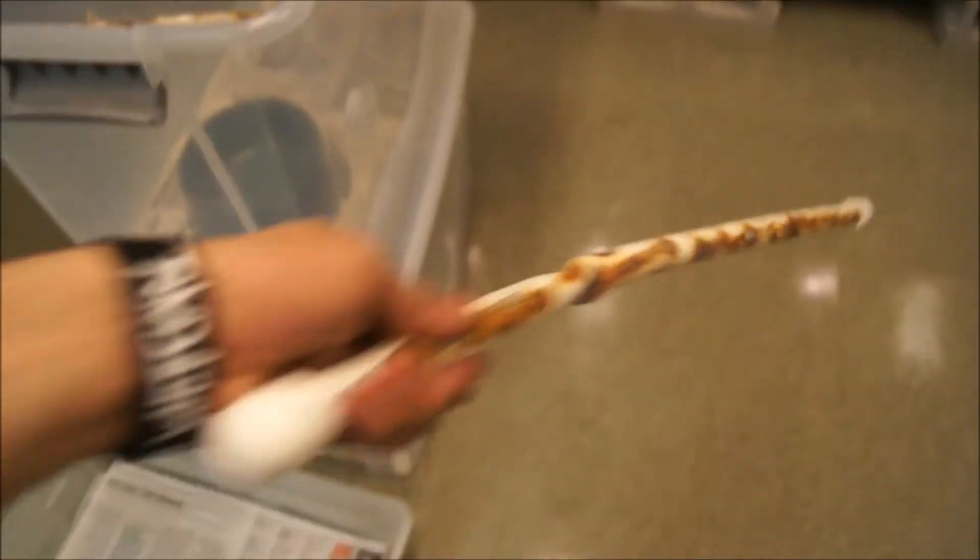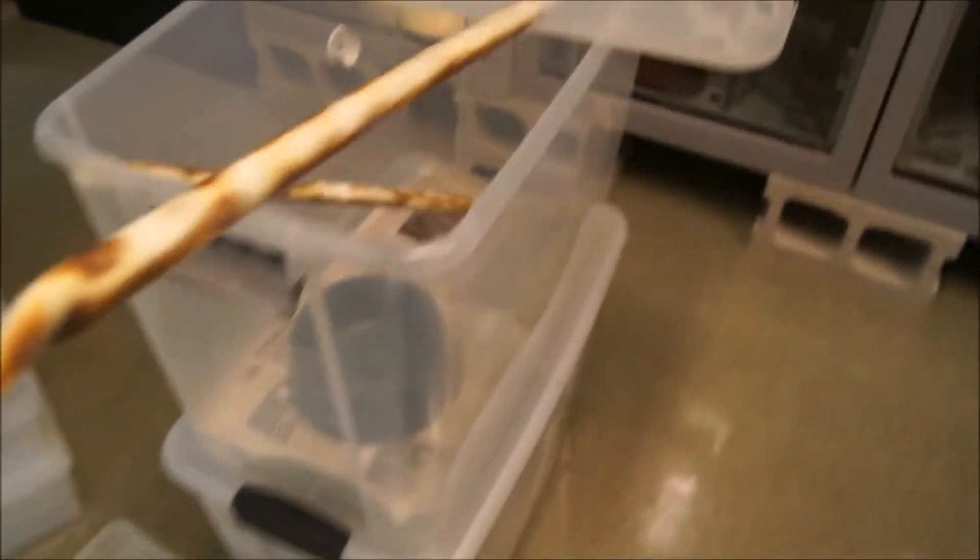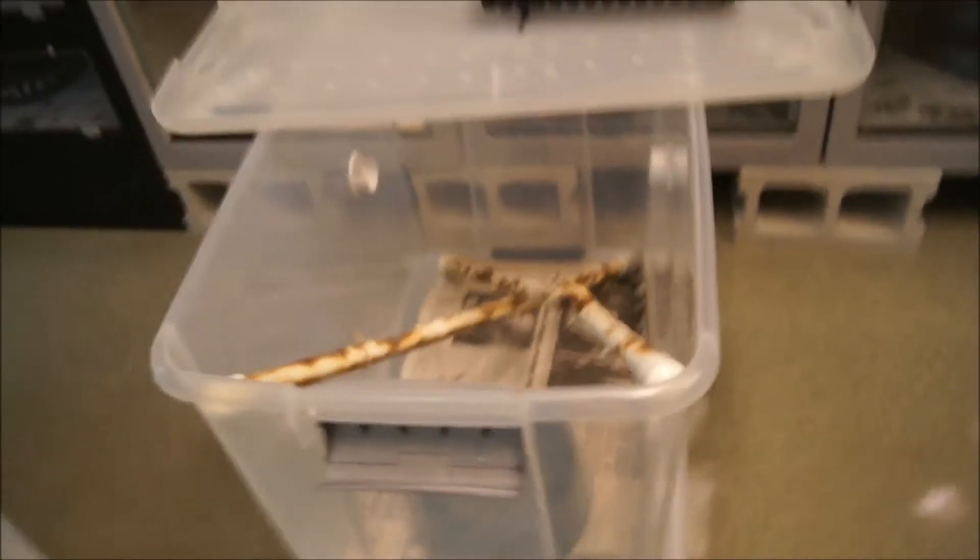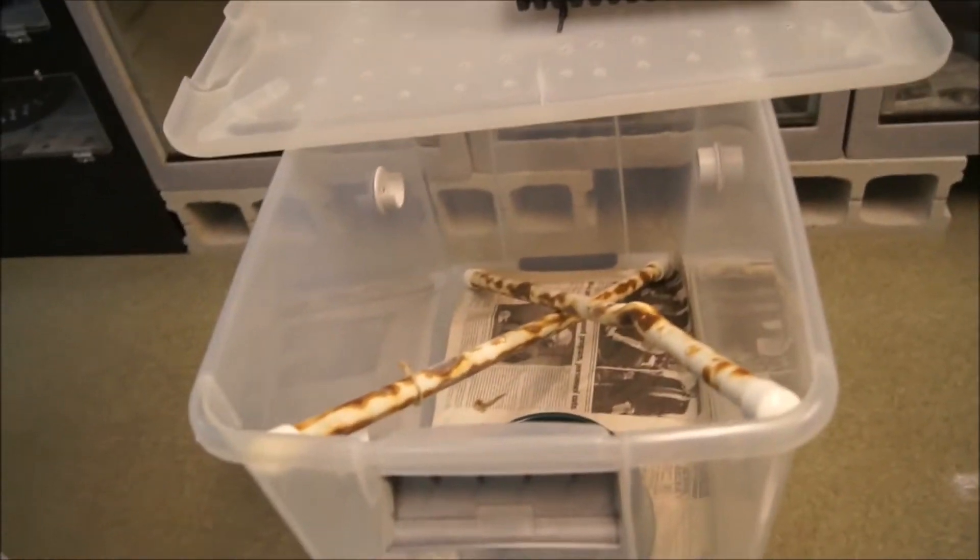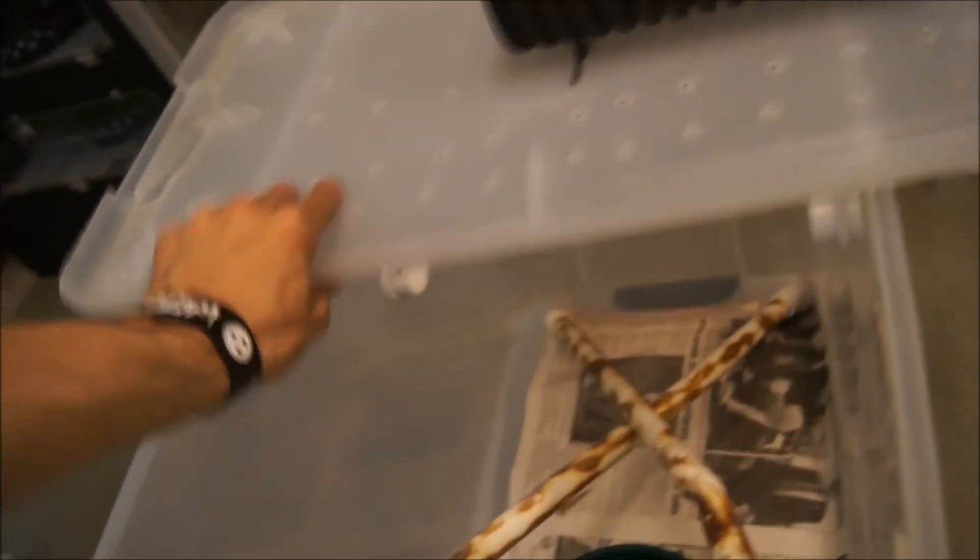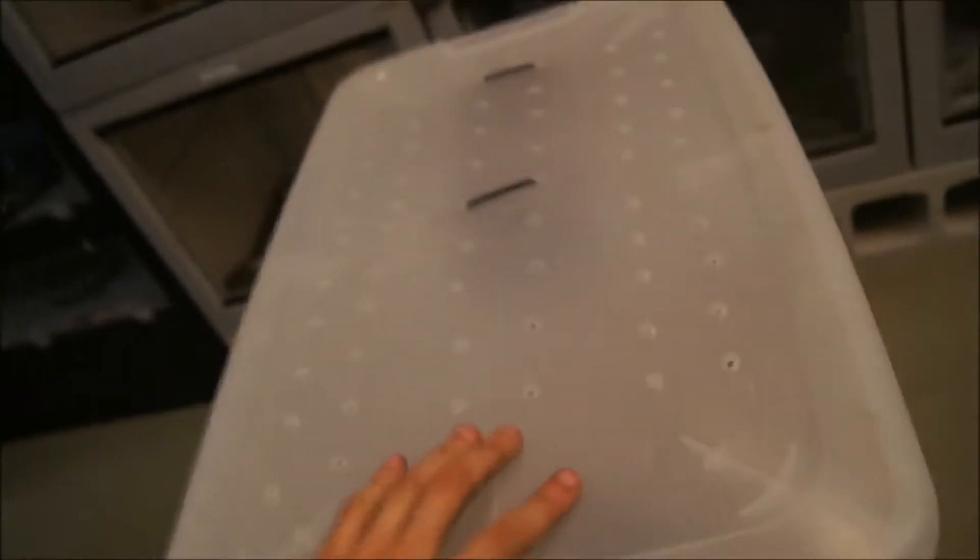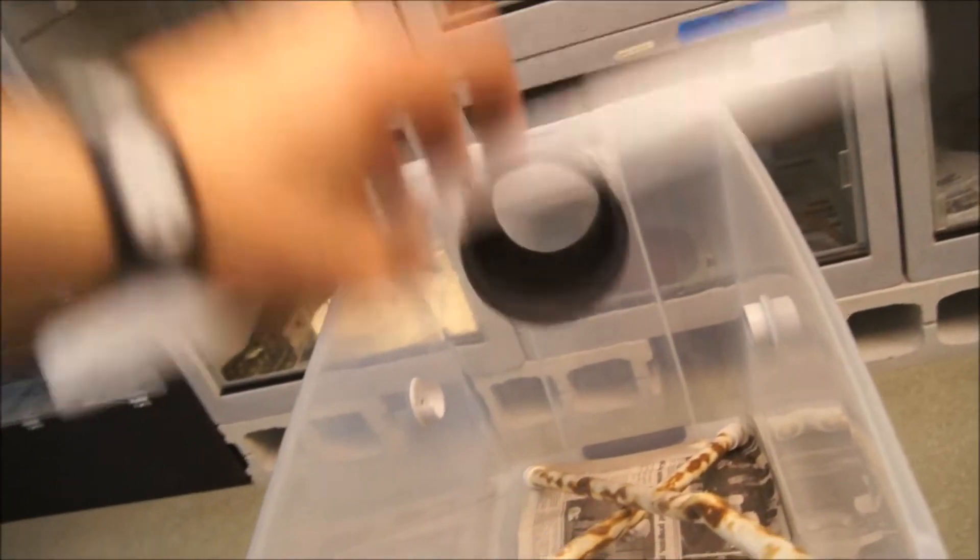And also we just use the scorched PVC and just make a little cross section there for branches for them to climb on. But honestly the majority of the time during the day our Amazons spend most of it up in the corrugated tubing.